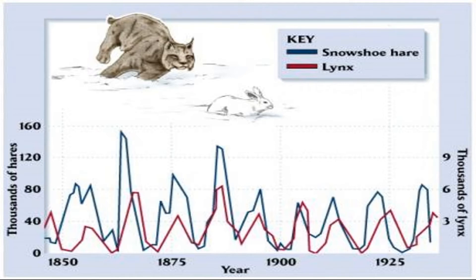Lynx hunt, kill, and eat the hare, and this increases the death rate in the hare population, causing it to decline. But once the snowshoe hare population declined, the lynx population also began to decline. With less food available, the lynx began to compete for food. Some lynx would not compete successfully and would starve to death, causing their population to decrease.